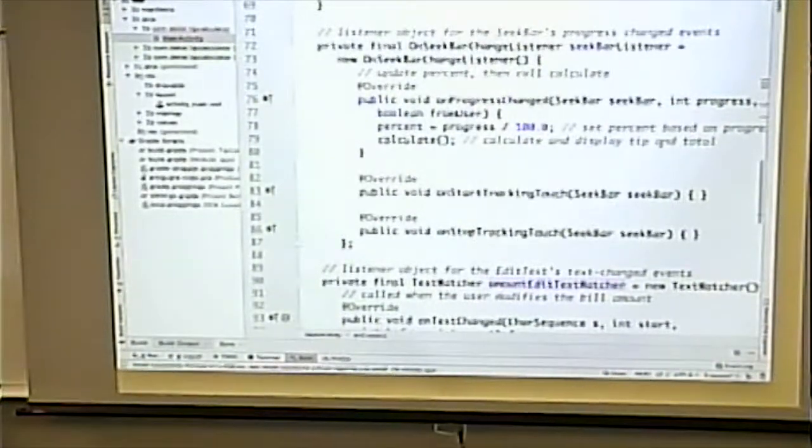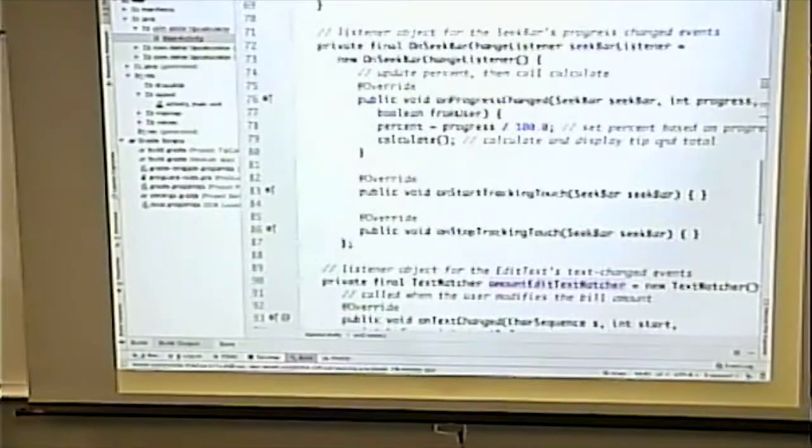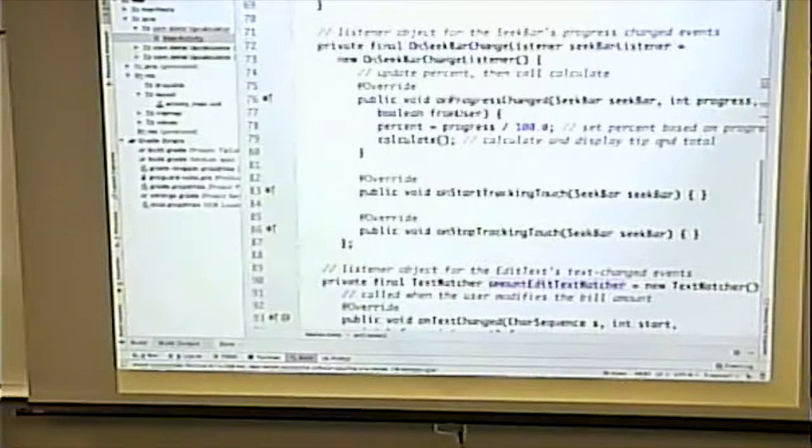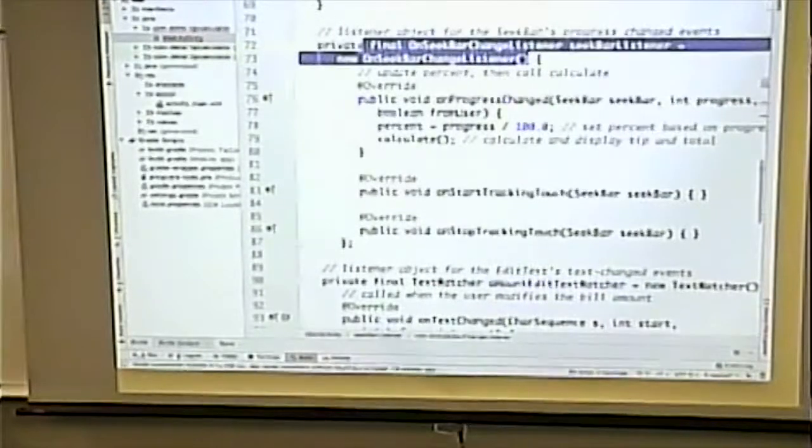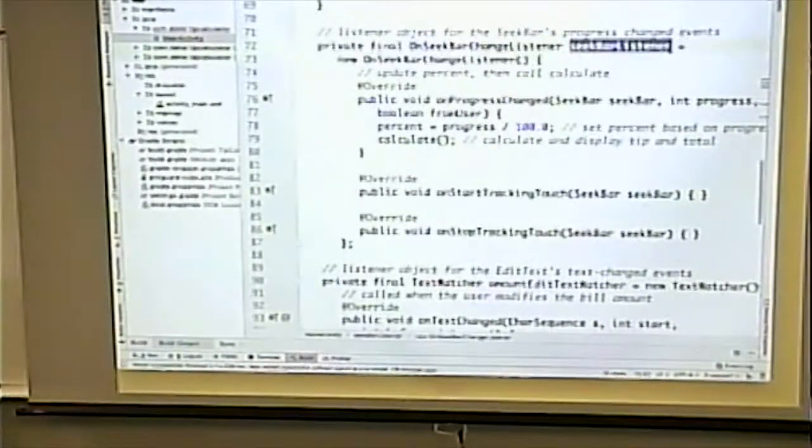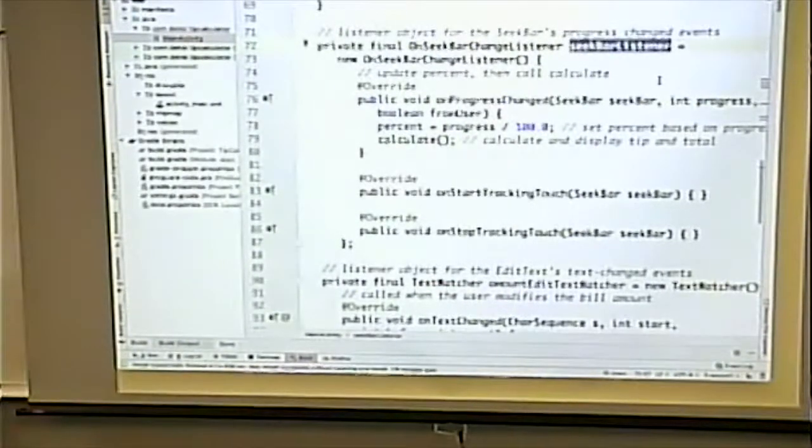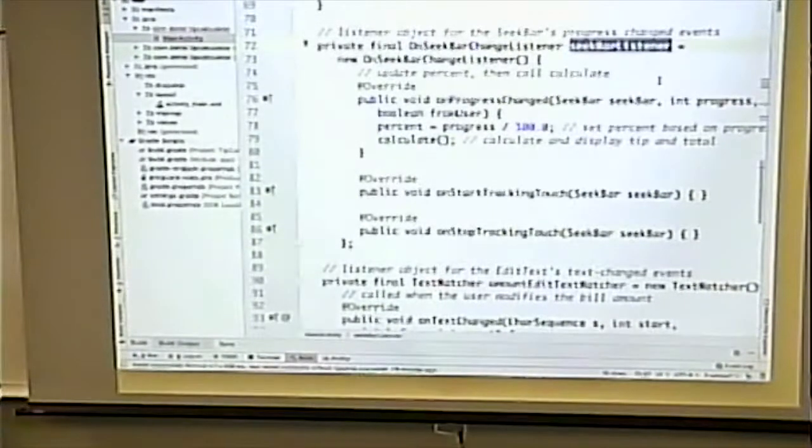This is a different way to define a class than we've seen before. Typically when we have a class, it's in another file. It's in its own file. And it has a name. We're defining it using this interface. The object has a name. But the class that implements that interface doesn't really have a name. This is what's called an anonymous class.